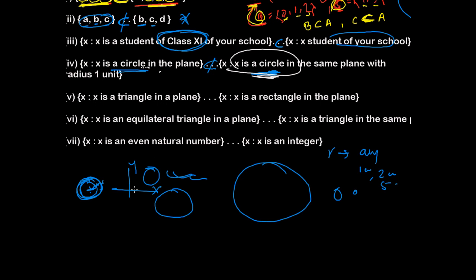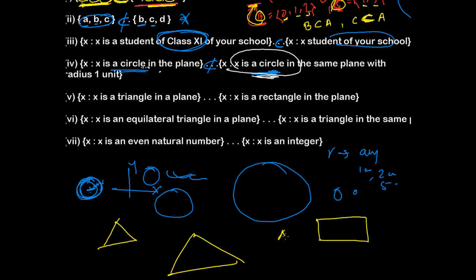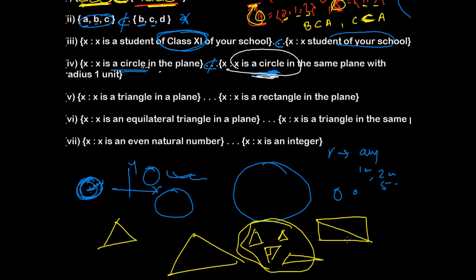The next problem: X is a triangle in a plane, and the second set X is a rectangle in a plane. Triangles can be of any measurement — right angle triangle, scalene triangle, isosceles triangle. A triangle cannot be a member of all rectangles, because triangles and rectangles are different shapes. So triangles are not the subset of rectangles — this is not a subset.